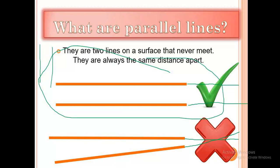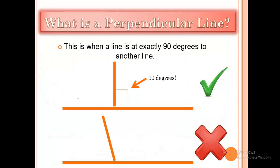What are perpendicular lines? When a line meets another line at exactly 90 degrees. For perpendicular lines, two lines — one going like this and the other like that — the degree between the two lines is 90.